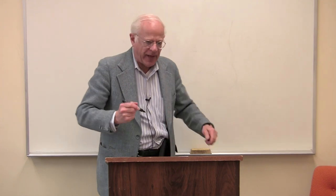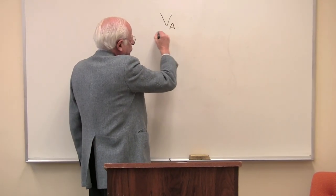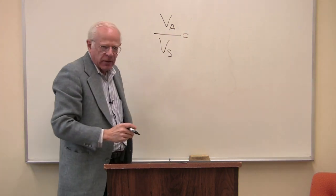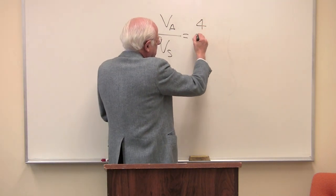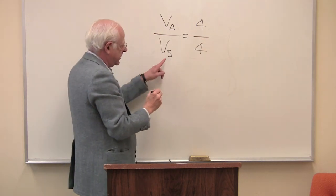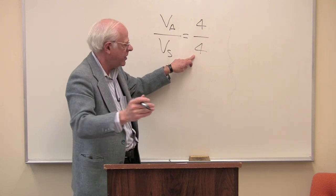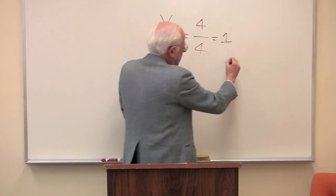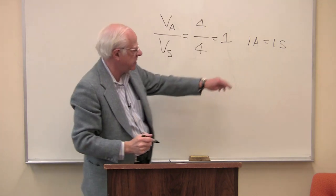Marx talks about a relative form of value. I'll write it on the blackboard: the value of an apple relative to the value of a shirt. The common substance for both is abstract labor — four hours of abstract labor to produce an apple, and four hours of abstract labor to produce a shirt. So it's a common qualitative dimension in numerator and denominator, and hence the answer is one — one apple is equal to one shirt.